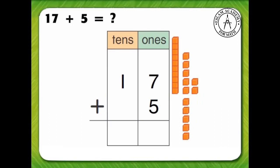In step 1, add the ones. 7 plus 5 equals 12.